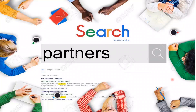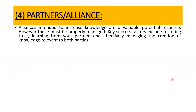The fourth source of knowledge acquisition is the partners or alliances of the organization. The partners working with the organization can also prove to be an important source for providing knowledge. They could be a valuable potential resource for knowledge — it involves fostering trust, learning from the partner effectively, and managing the creation of knowledge that is relevant to both parties. Knowledge has to be a two-way process — creation of knowledge that is beneficial to both parties.